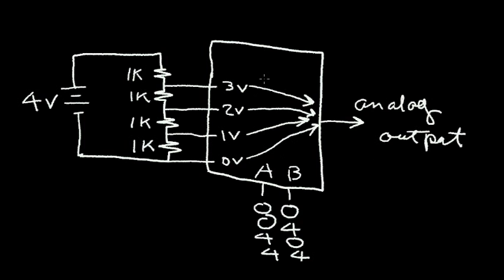In a future video we'll determine how to design the circuit, but in this video I just wanted to show you the concept: you can take two inputs with four different conditions, tap off four different voltages, and send each one to an analog output. That's called a digital-to-analog converter.